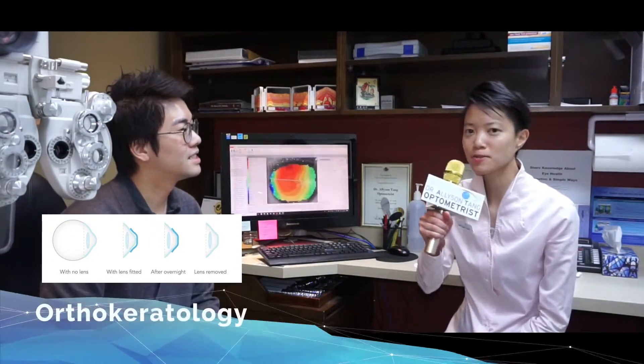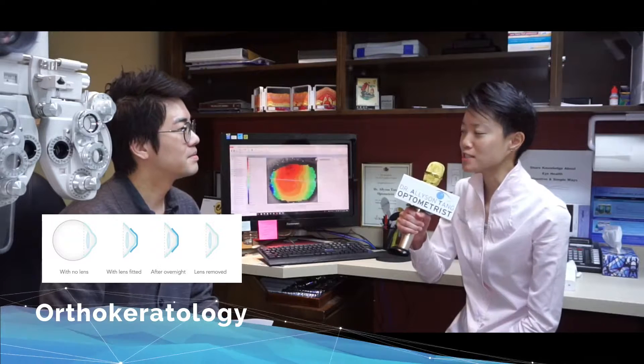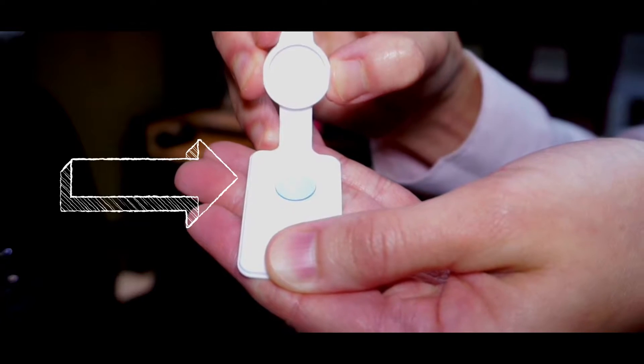Yes, ortho-K is short for orthokeratology and it is the science of using specially designed rigid contact lenses to gently reshape the front part of your eye. These rigid contact lenses are small and create a gentle force with your tear film to reshape the cornea or the front part of your eye while you sleep.